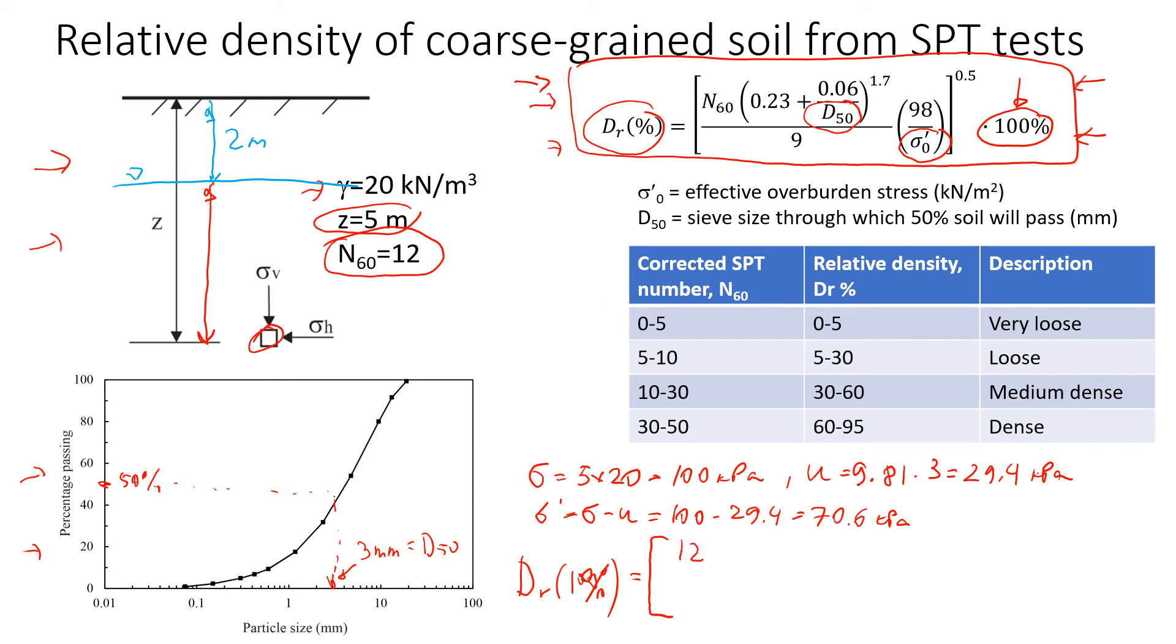This is what we get from the SPT test, times 0.23 plus 0.06 divided by D50, we use in millimeters, so 3, and it's going to be in the power of 1.7, divided by 9. And here we have another component, which is 98 divided by the effective stress, which we already found, 70.6, and everything is in the power of 0.5.